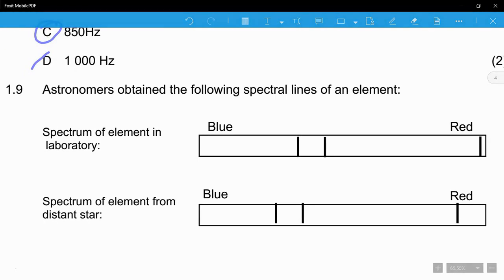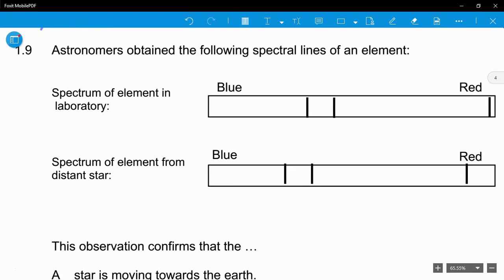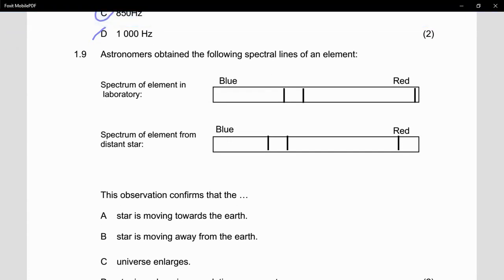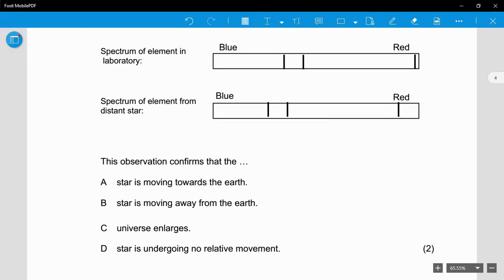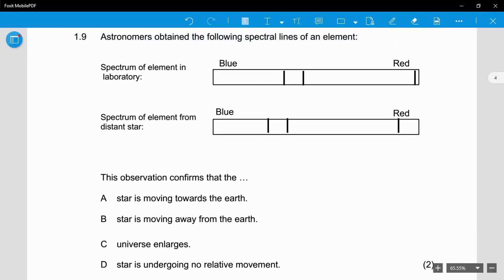Question 1.9: This deals with red shift and blue shift. There's nothing I can really teach you - you just have to understand this theory. Astronomers obtained the following spectral lines of an element: spectrum line in the lab and spectrum of an element from a distant star. This observation confirms that: A) the star is moving towards Earth, B) the star is moving away from Earth, C) the universe is enlarging, or D) the star undergoes no relative movement. We can see there's a slight shift here in red, moving towards. Therefore the star is moving towards the Earth. This you're just going to have to understand - go through your textbook on definitions of blue shifts and red shifts. You're just going to have to learn it.